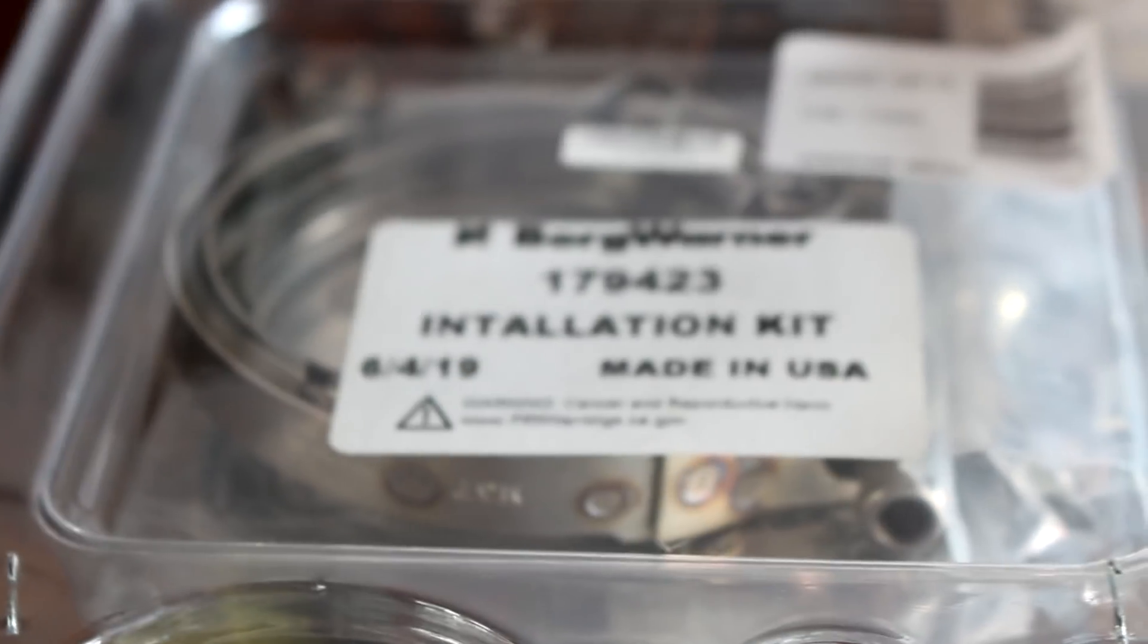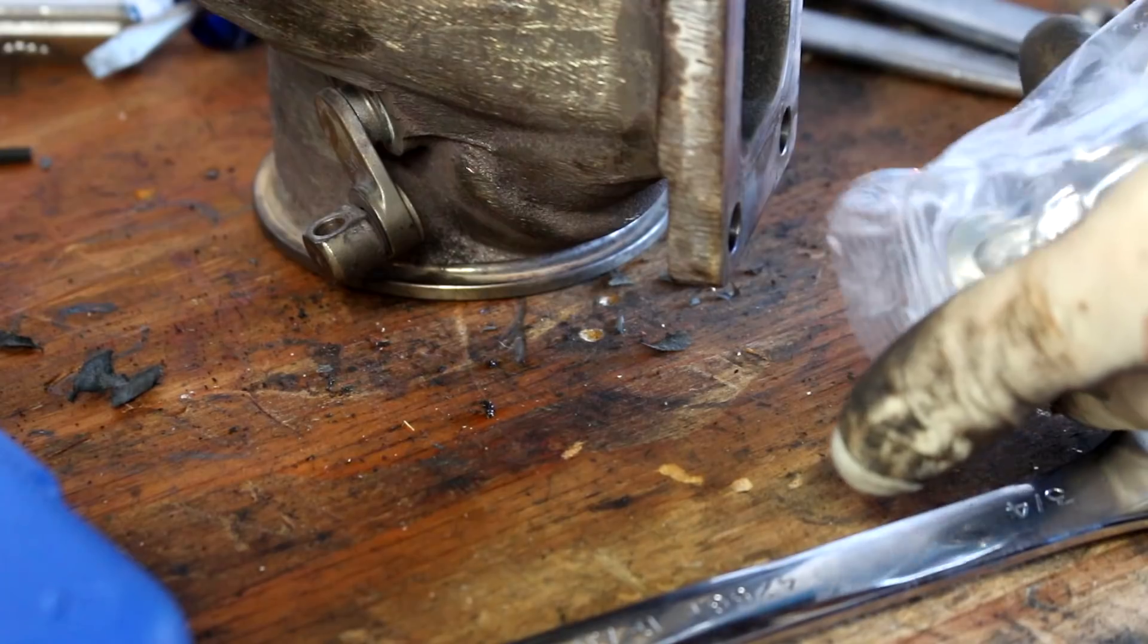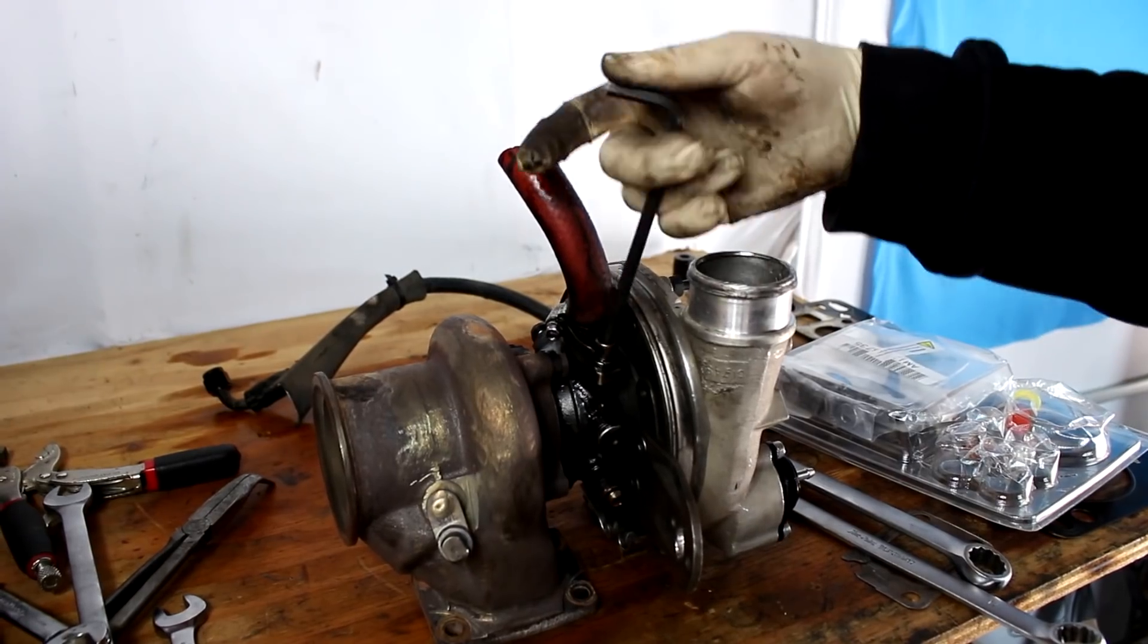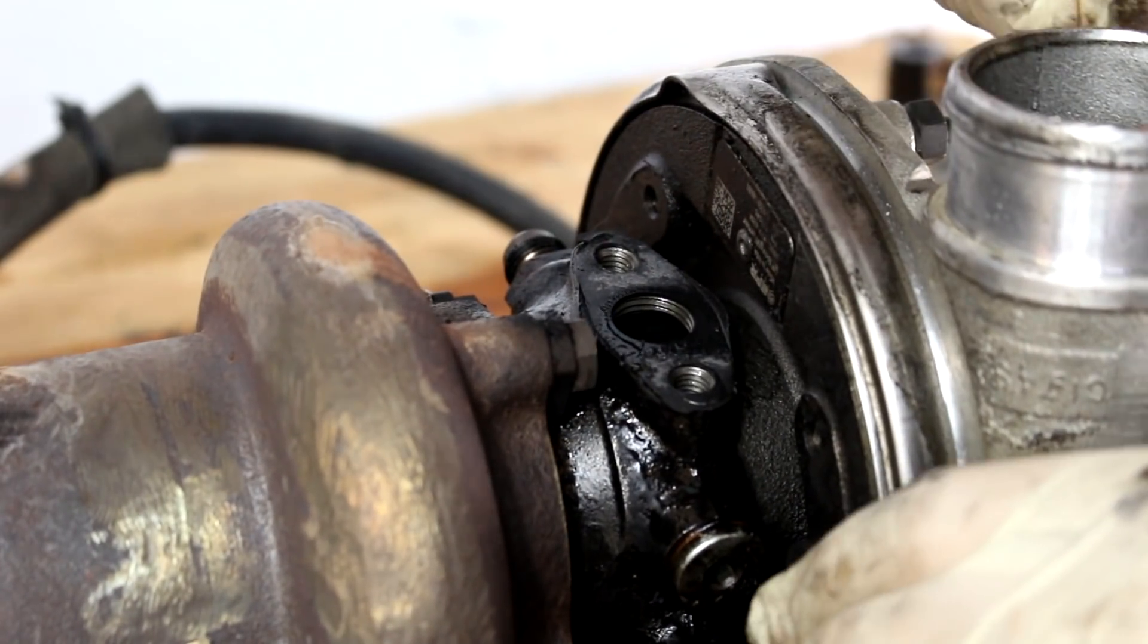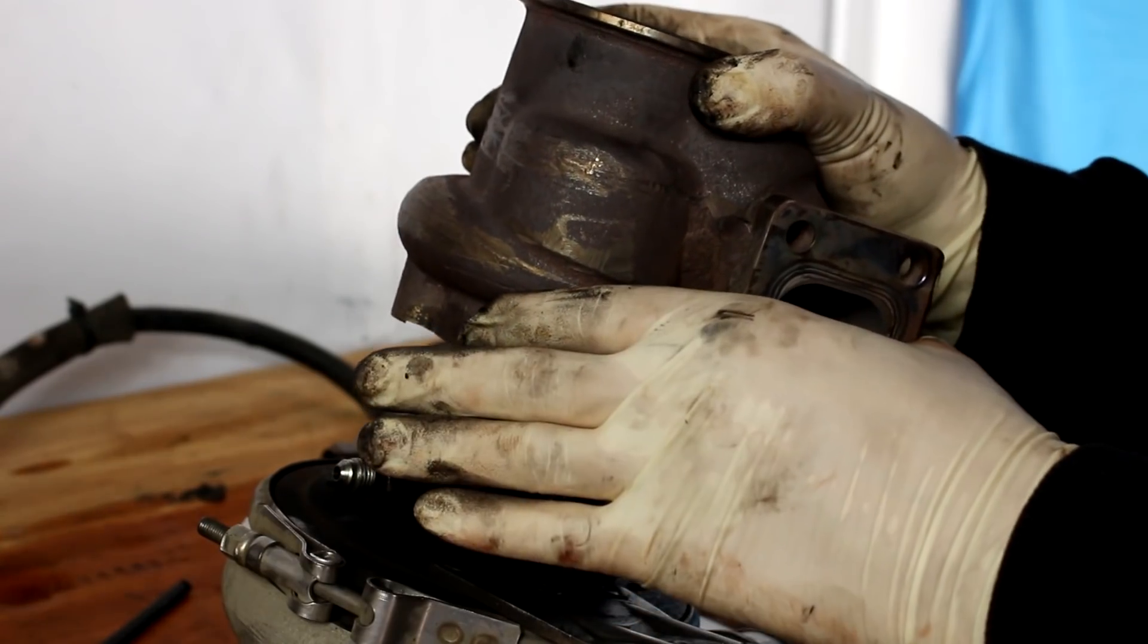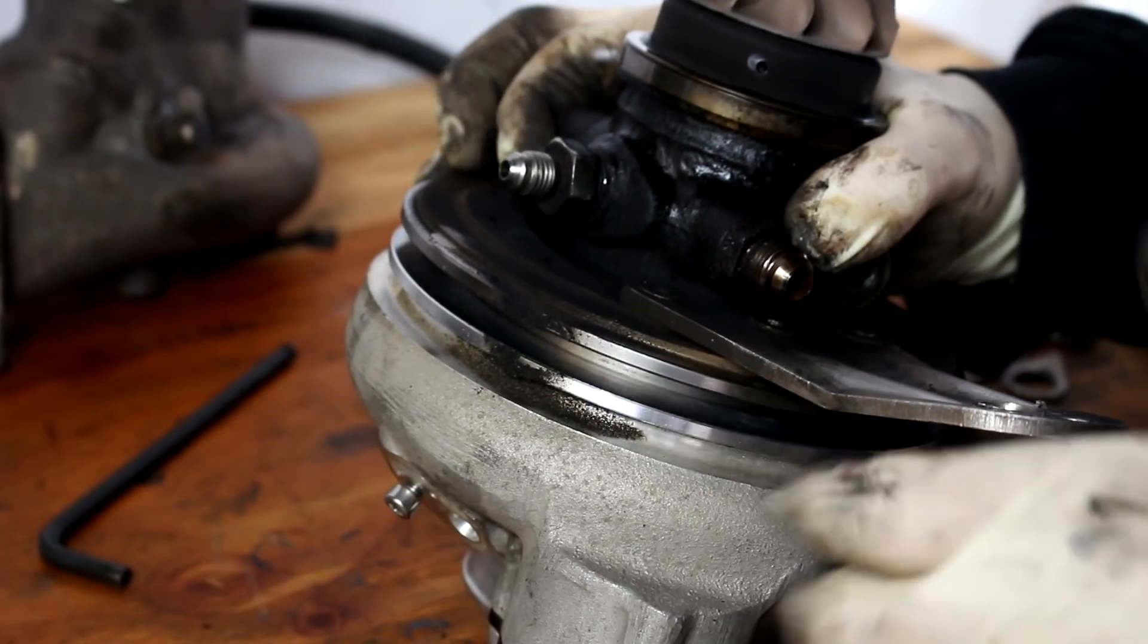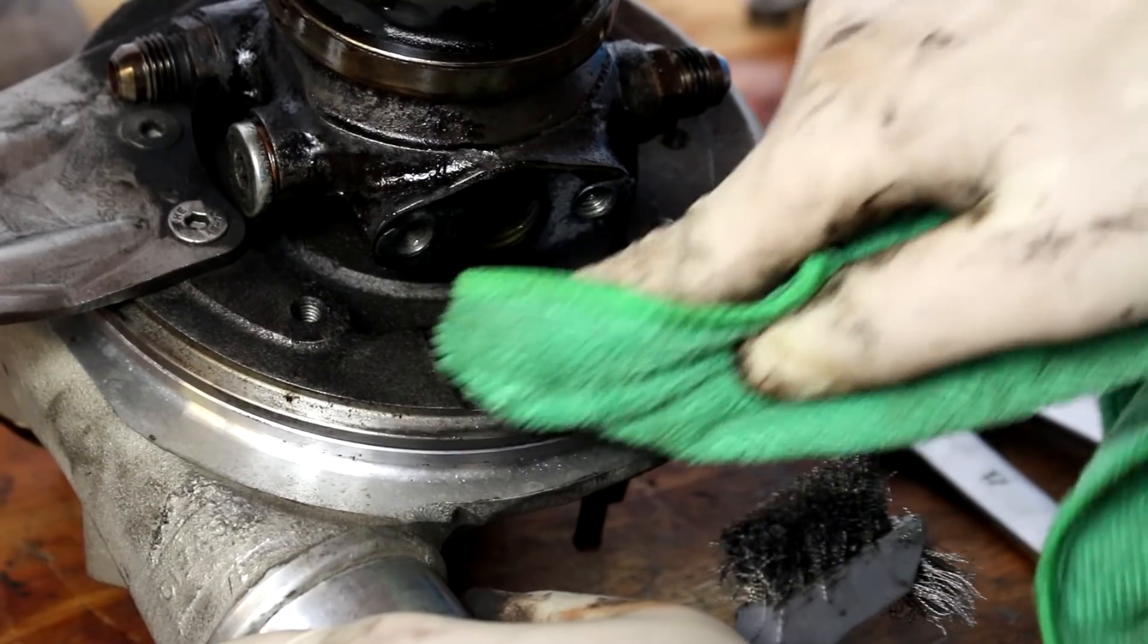I also got this Borg Warner installation kit because number one, I needed a new gasket, but number two, I actually lost one of the bolts that holds the turbine housing to the CHRA. At some point it vibrated out. So I needed to get that little triangular bit and one of the bolts to hold everything together. So I figured it'd be a good idea to freshen up the turbo.